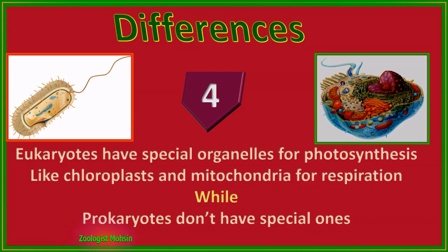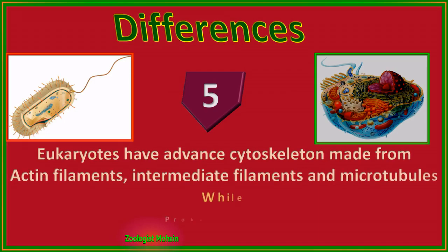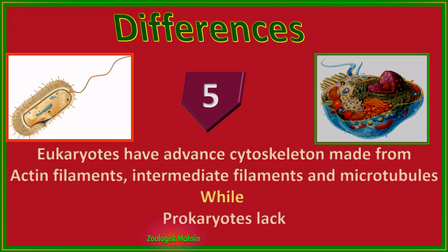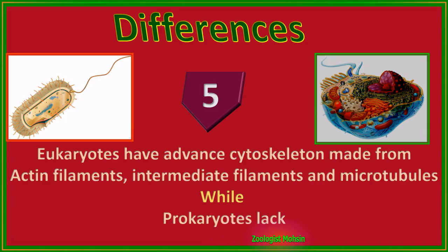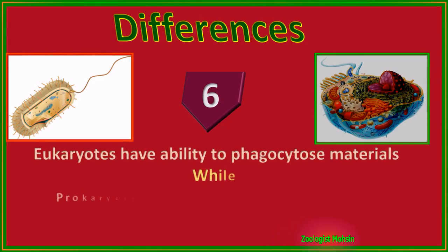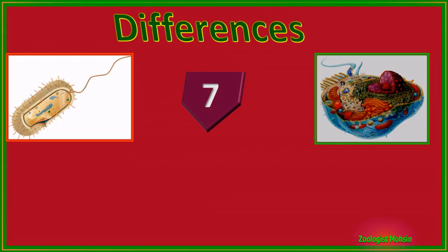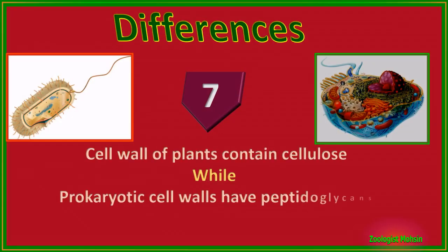Number four: eukaryotes have special organelles for photosynthesis like chloroplasts, and mitochondria for respiration, while prokaryotes don't have such specialized ones for these purposes. Number five: eukaryotes have an advanced cytoskeleton made from actin filaments, intermediate filaments, and microtubules, while prokaryotes lack intermediate filaments, actin filaments, and microtubules.